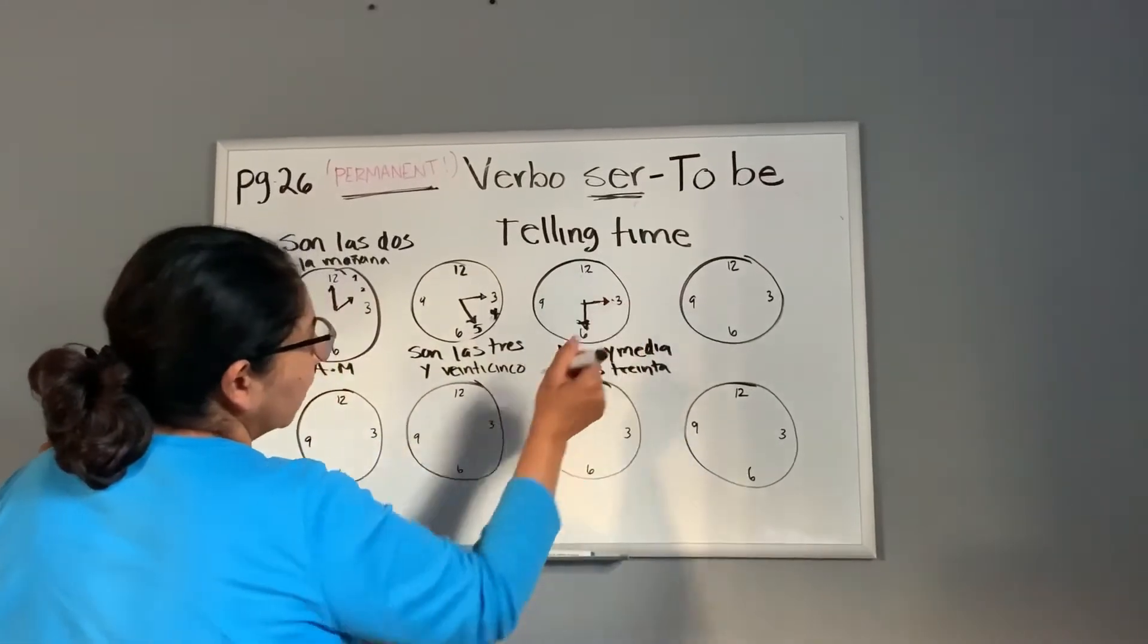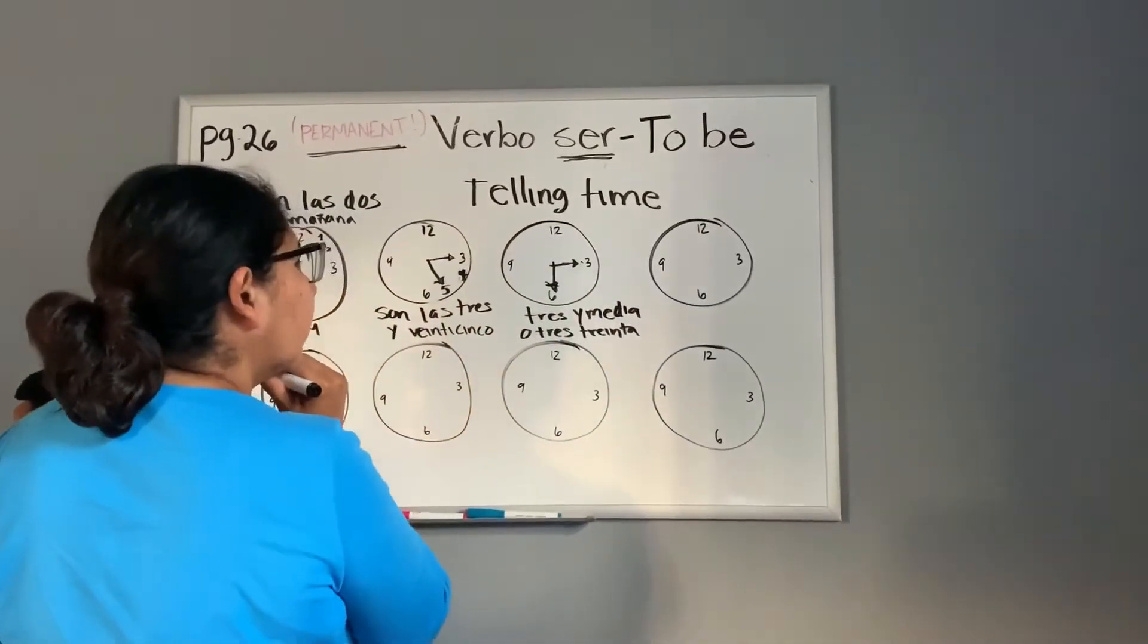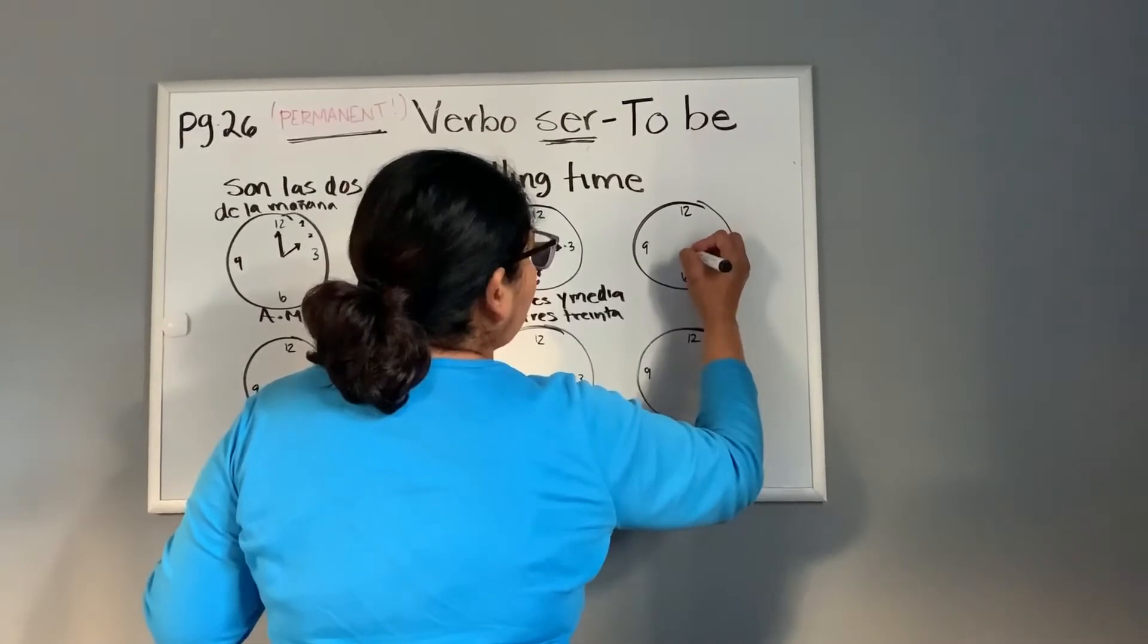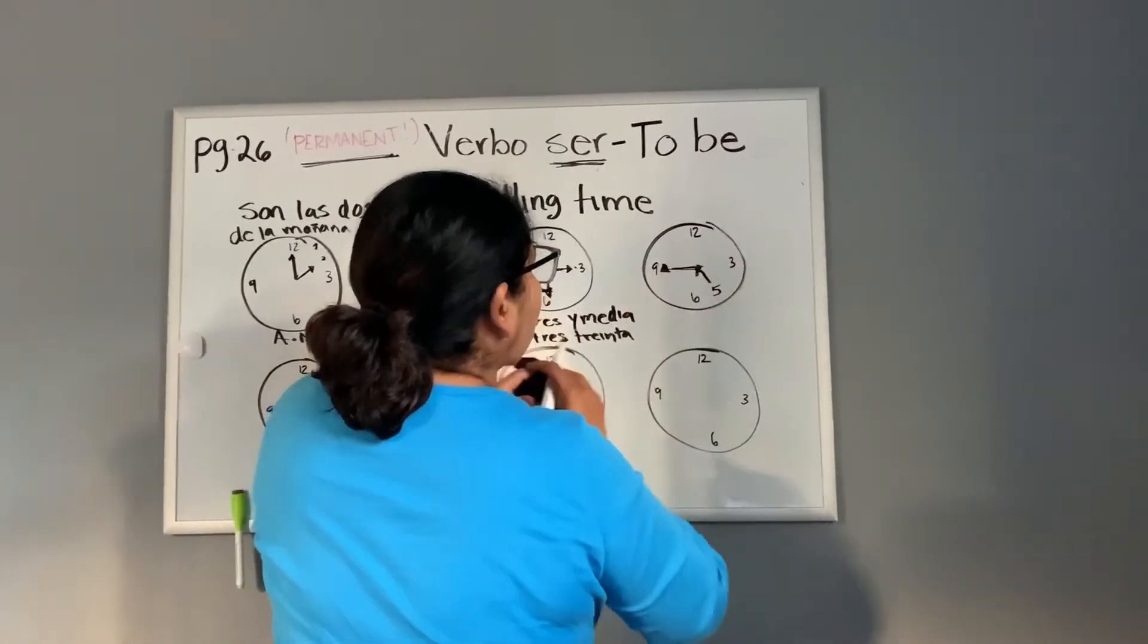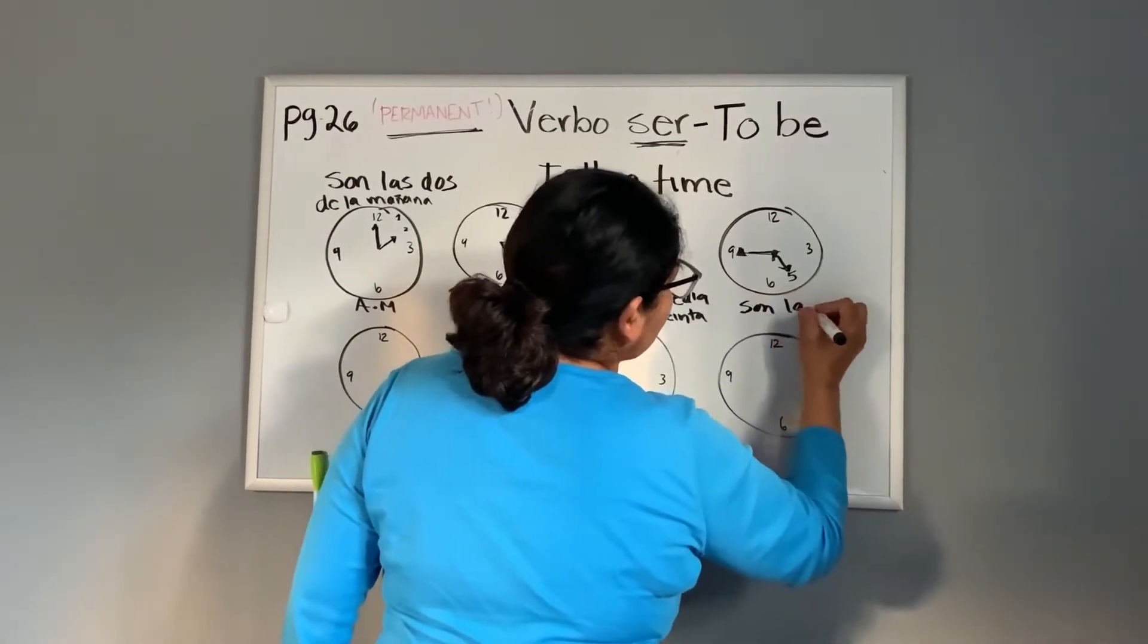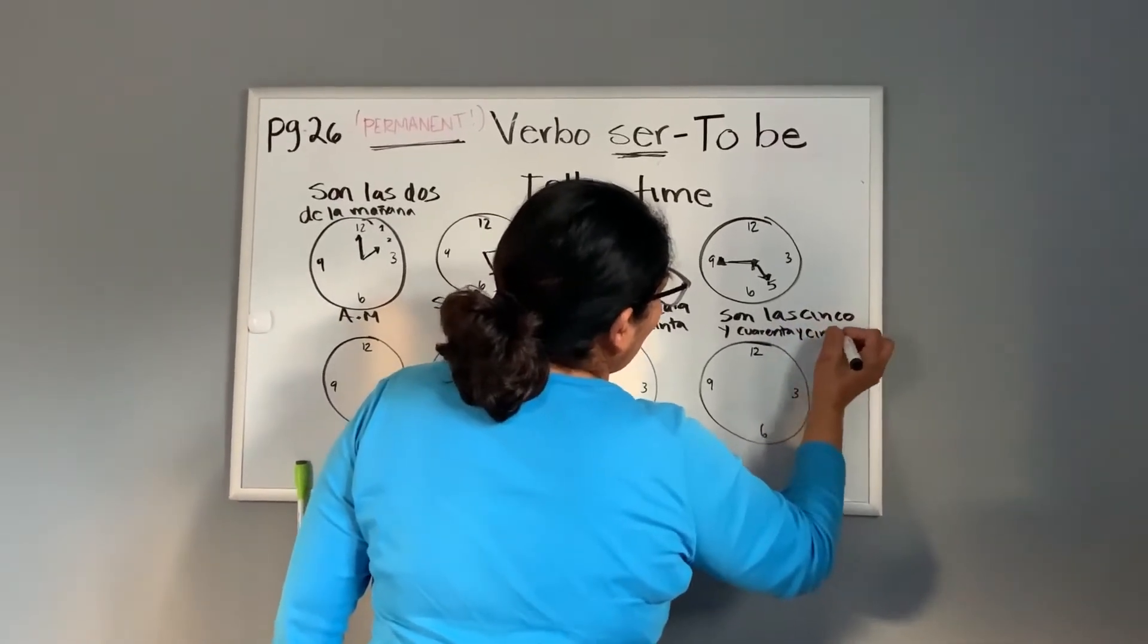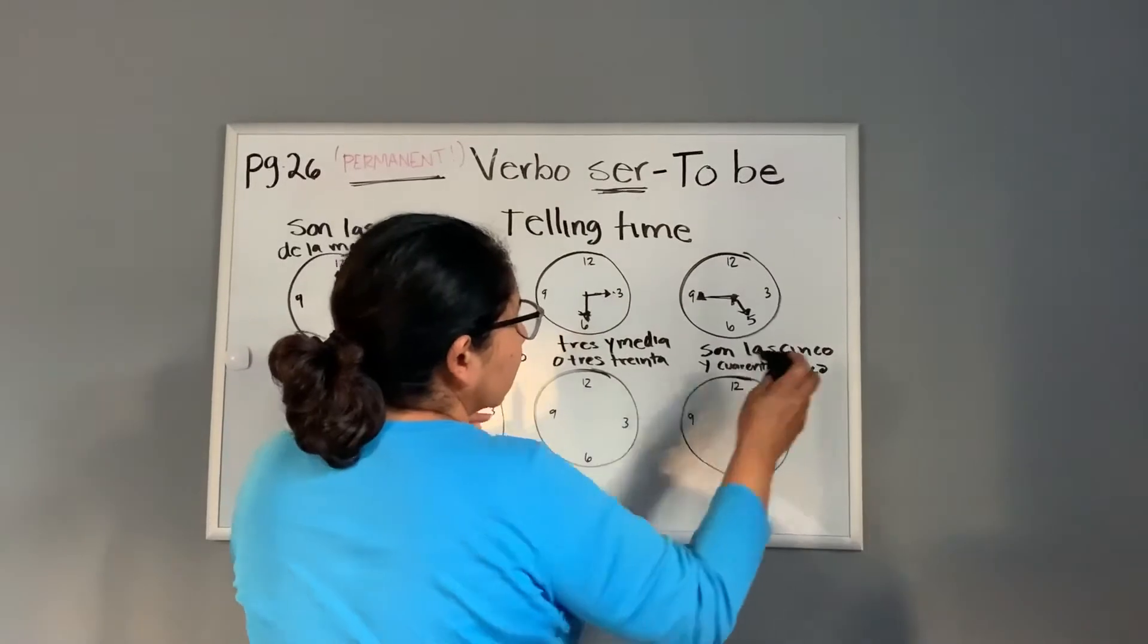And then, let's say it is five forty-five. This is five forty-five. Son las cinco, cinco y cuarenta y cinco. Or you can say, it's six minus fifteen, okay. Seis menos quince.